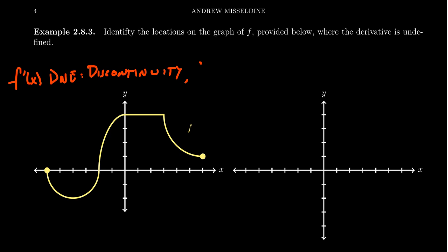Another thing we have to look for is sharp corners — places where the function is not smooth. We see at least one here on the graph; there's a sharp corner right here. Another place which might be suspicious would be right here, but you actually see that the transition from curve to flat is actually smooth. There's no corner there. So we did get one place where the derivative will be undefined — it's not differentiable at x equals 3.